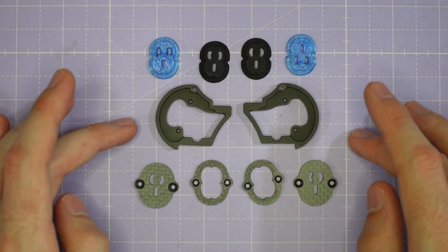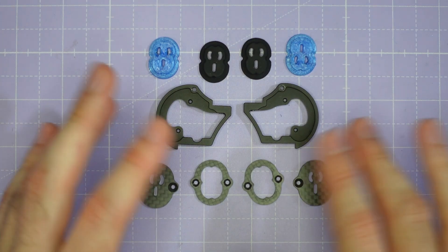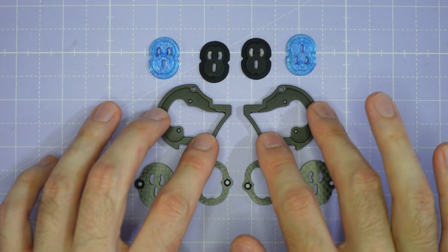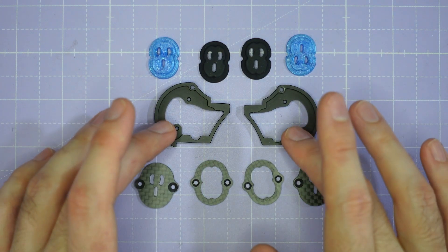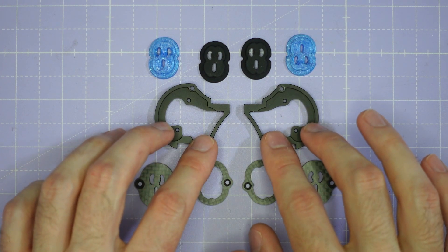We're going to start by assembling the camera cage and both camera cage parts are identical, they're symmetric, there's no left or right side. Start by setting the camera cages up back to back like this, that makes sure that you're going to attach the carbon fiber plates to the right side of each of the camera cages.